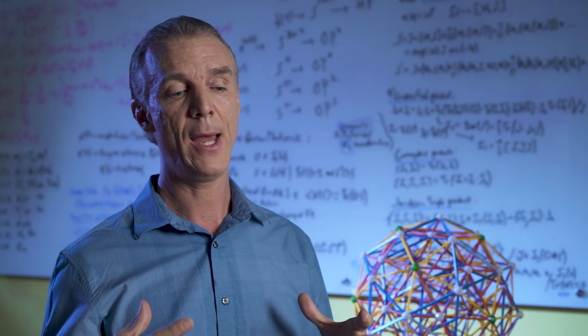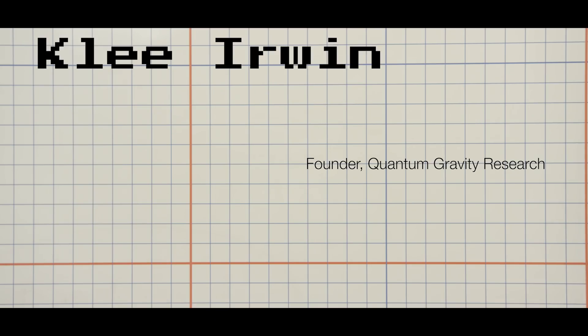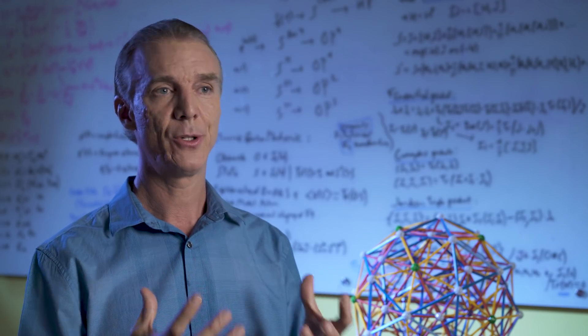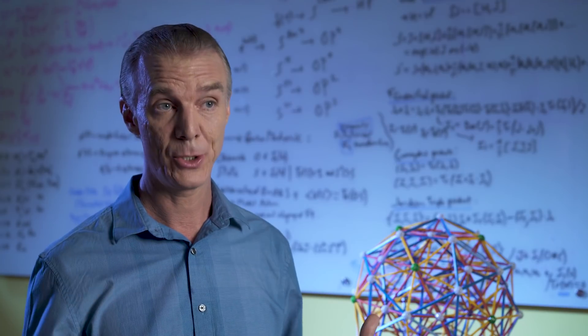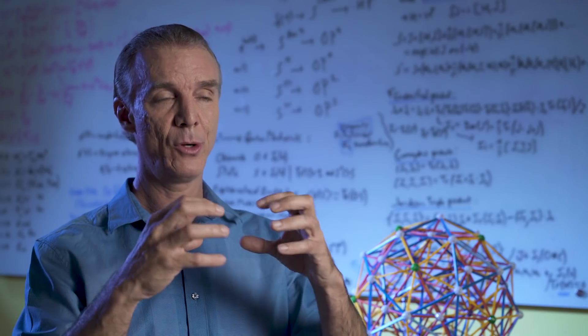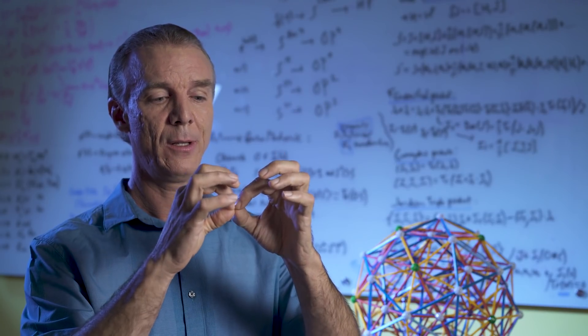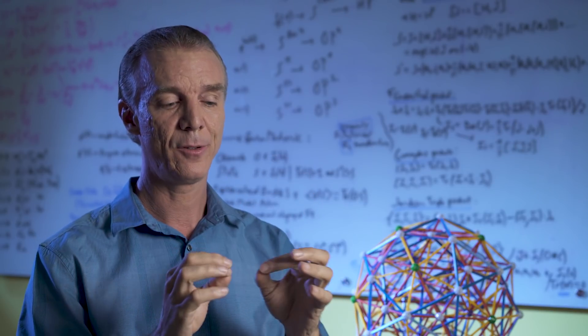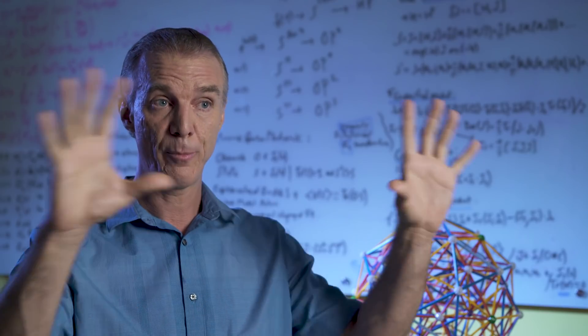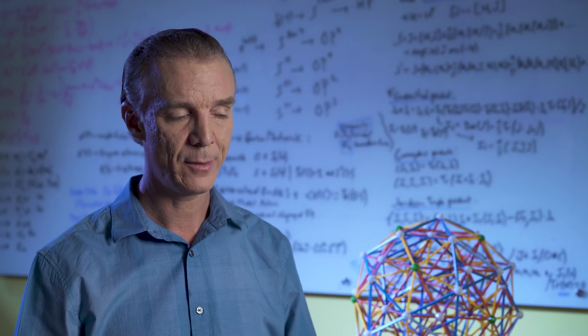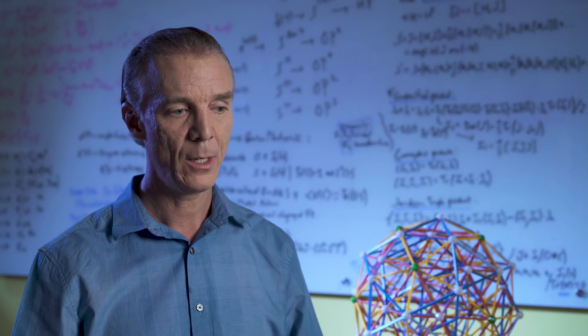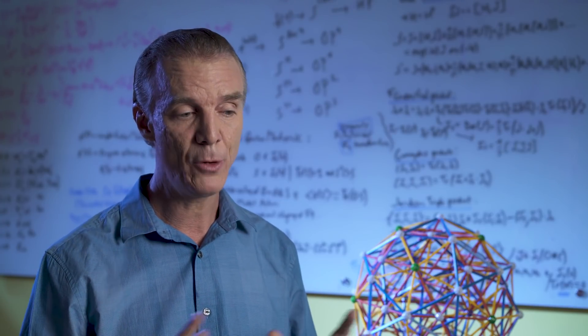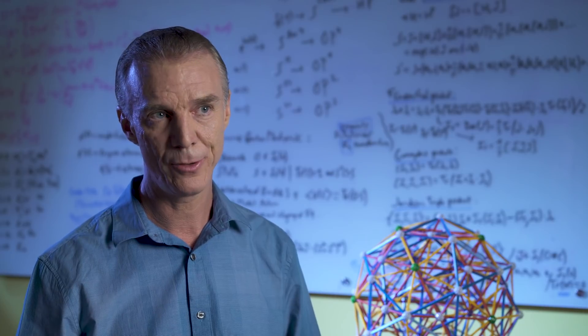E8 can be thought of as the densest or most efficient way to pack eight-dimensional spheres in an eight-dimensional space. And every time those spheres kiss, they kiss at a point. And so the E8 lattice is this set of points that are defined by the kissing points of this densest and most efficient packing of eight-dimensional spheres.